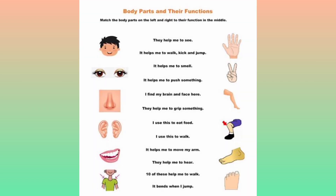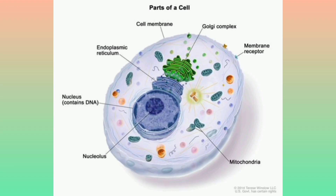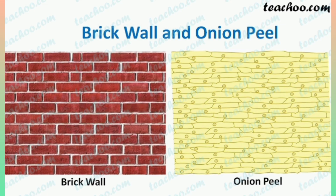As we all know, different sets of organs in our body perform various functions. In this chapter, we shall learn about the basic structural unit of an organ, which is the cell. Cell may be compared to bricks because bricks are assembled to make a building. Similarly, cells are assembled to make the body of every organism.